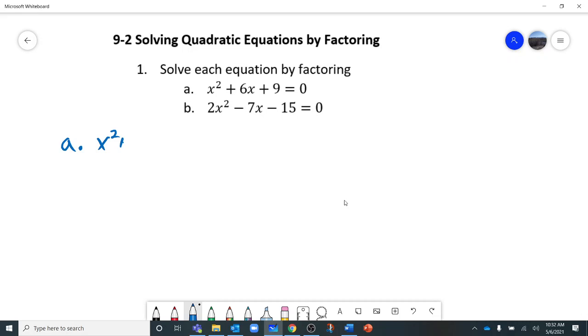we have x squared plus 6x plus 9. I want two numbers that when I multiply them, I get 9. When I add them, I get 6. A 3 and 3 work for that, right? And this is actually a perfect square trinomial. I can rewrite this as x plus 3 times x plus 3, which is x plus 3 squared.